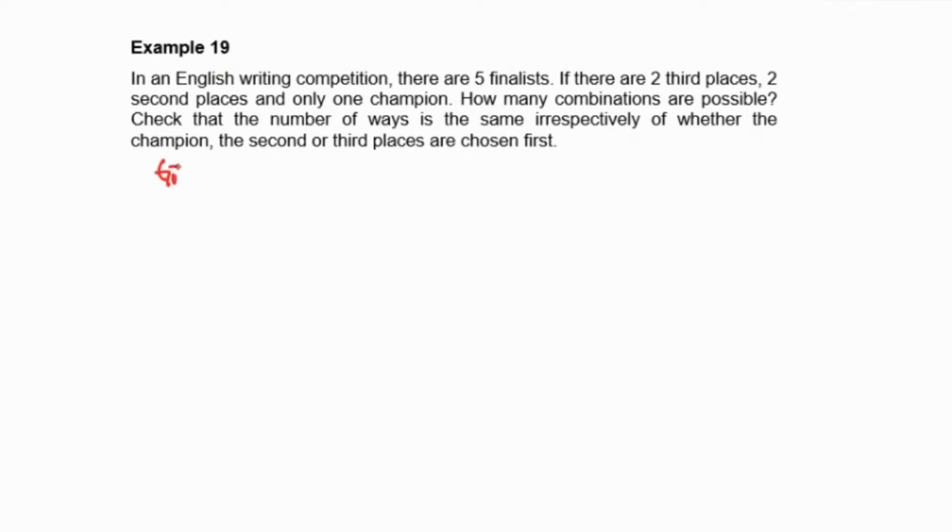You are given five finalists. For the first place there is only one, for the second place there will be two, for the third place there will be two. When you want to count the number of ways for the first place it will be five choices from the finalists. For the second place you will have four choose two.